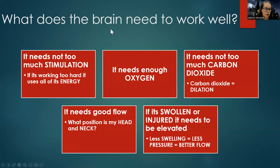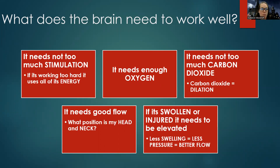To think about neuro patients, consider what the brain needs to work well. It needs not too much stimulation — if my brain is working too hard, it's using all of its energy. For these patients, we don't want a lot of stimulation. You'll see signs on doors for neuro patients like 'please see nurse before entering' or 'do not disturb.' When a nurse tells family to try not to interact too much, it's because noise, interaction, stress, and regular awakenings can cause too much stimulation, which for someone with a brain injury can be too much.